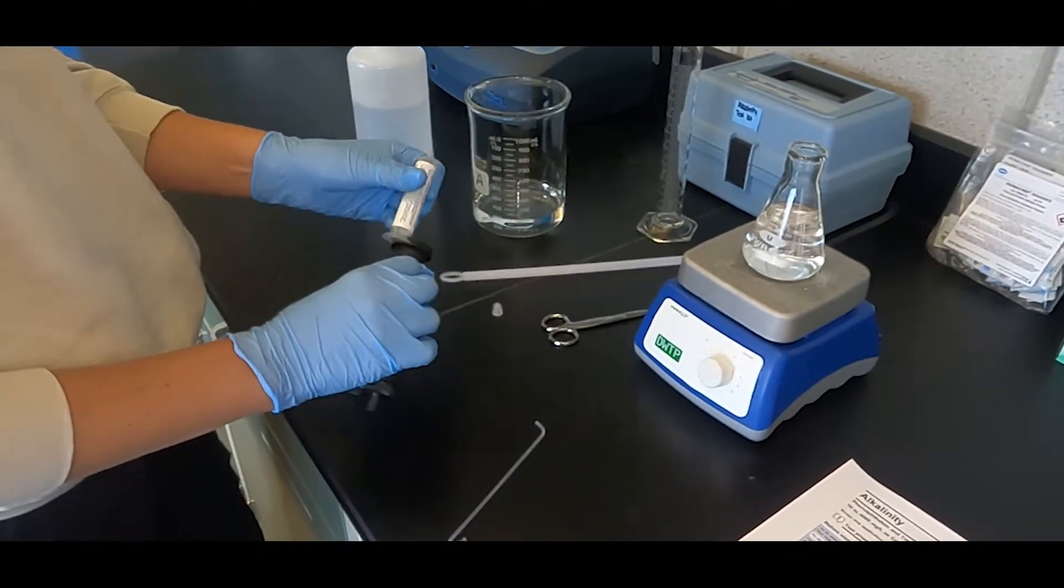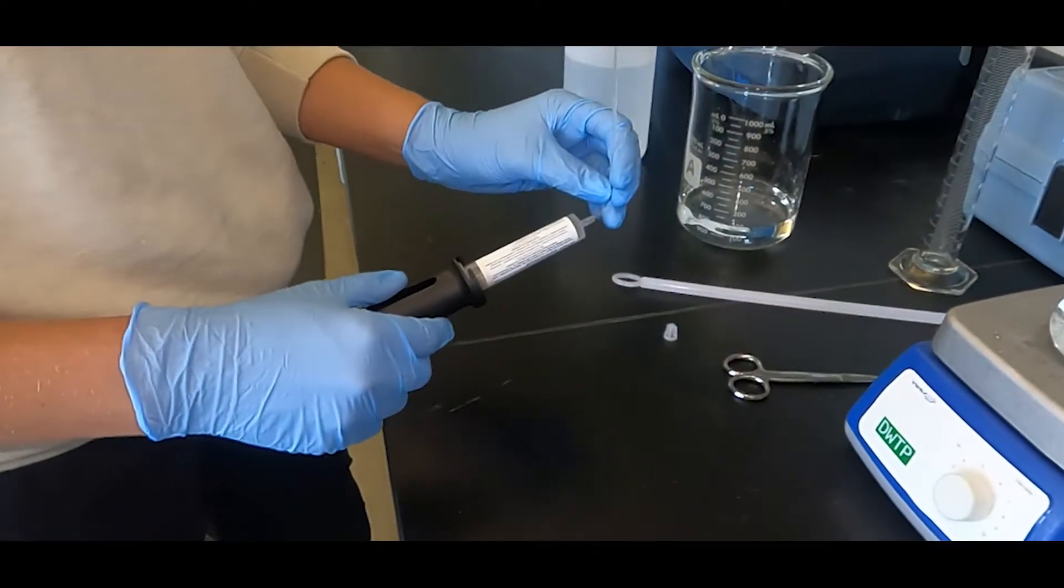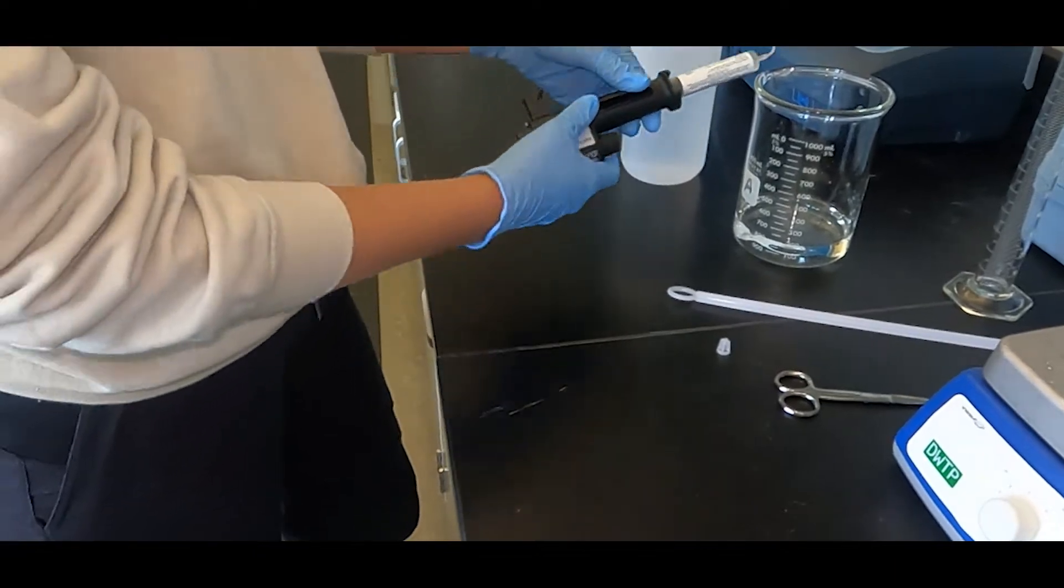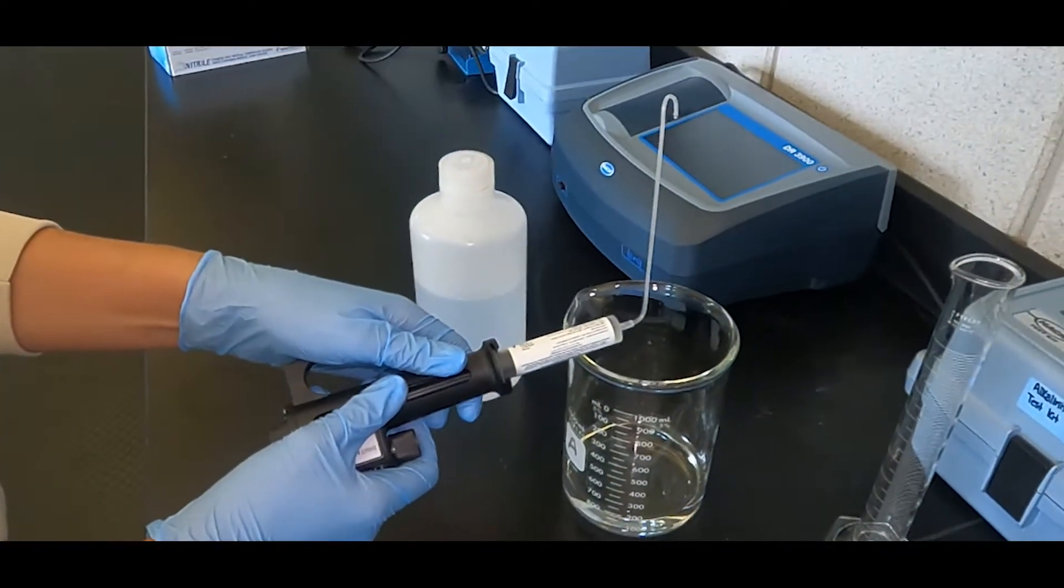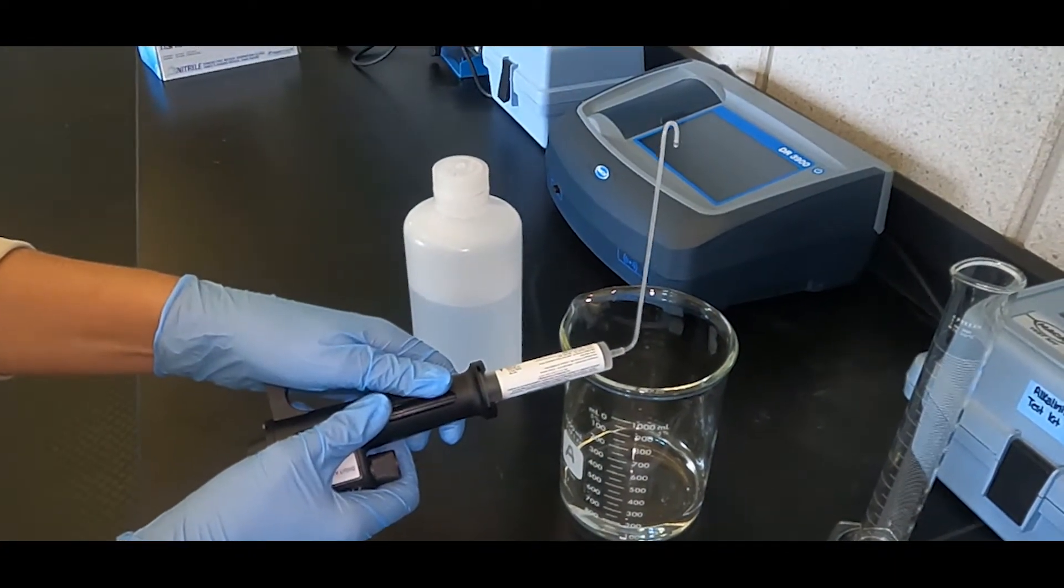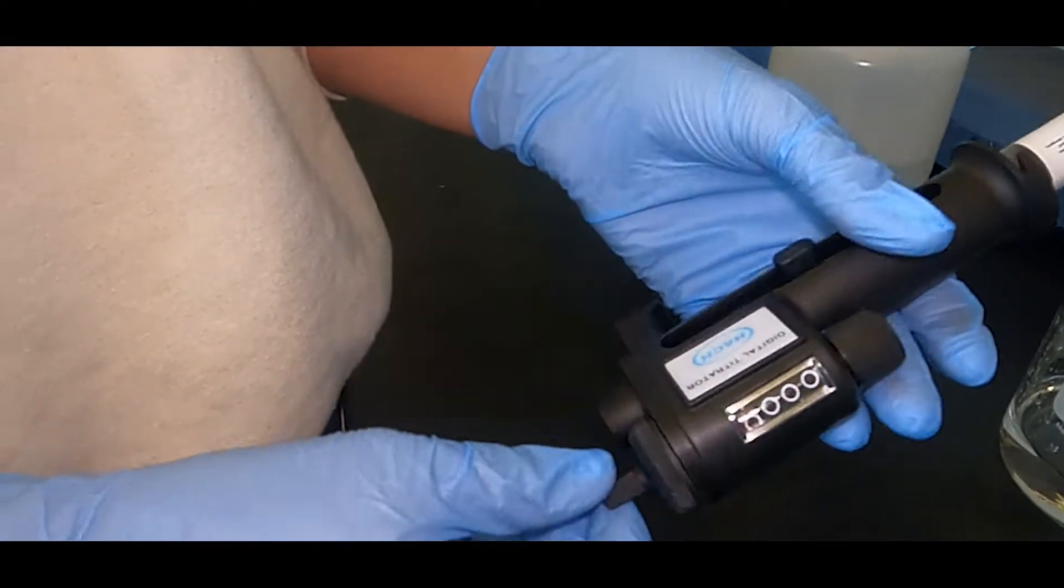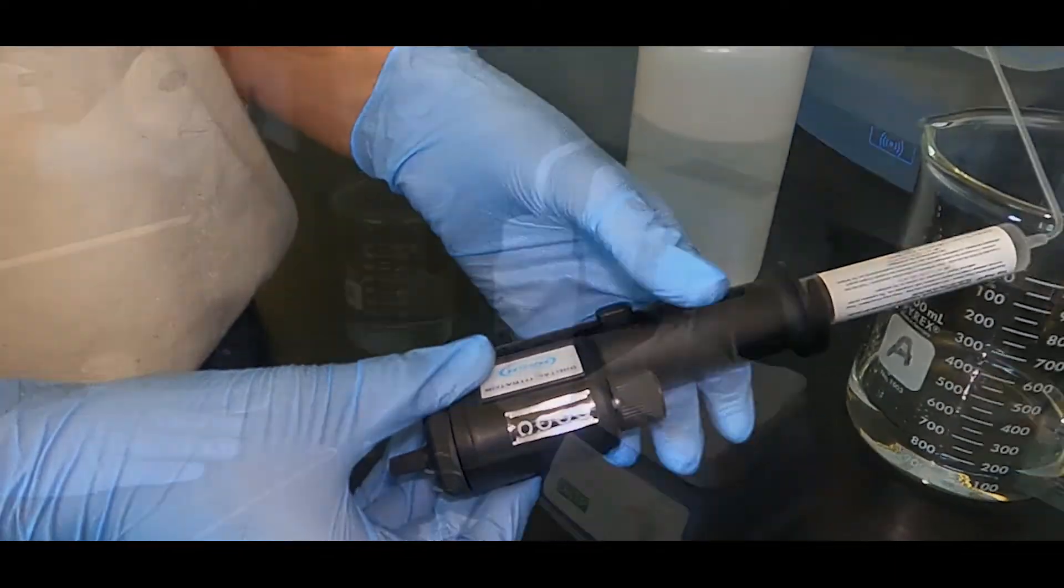Assemble the digital titrator following the instructions provided. To prime the delivery tube, hold the titrator tip up and eject the air and a few drops of the titrant into a waste beaker. Reset the counter to zero and clean the tip.